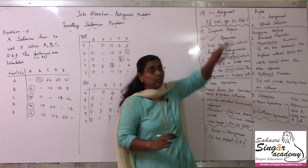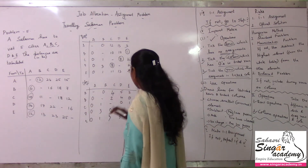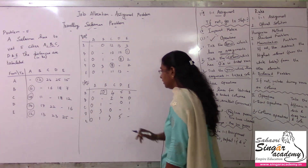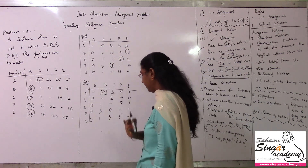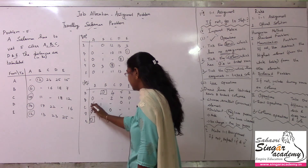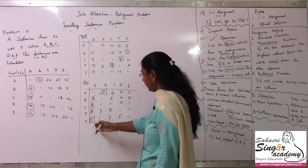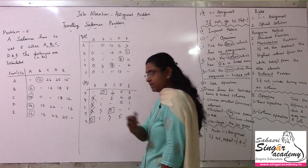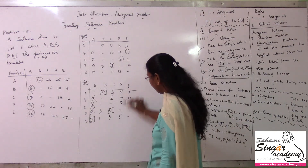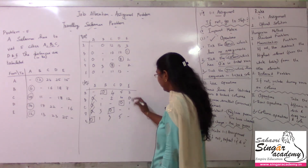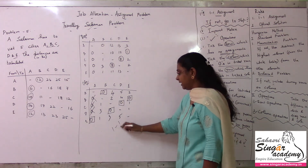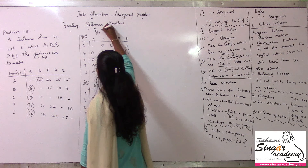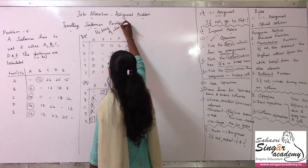I will try to make the 1-to-1 assignment. Starting with row A: there is one single 0, so assign it and cancel others. Row B: multiple zeros — skip, pending. Row C: multiple zeros — skip, pending. Row D: multiple zeros — skip, pending. Row E: one single 0 — assign it. Then going column-wise: column A is already assigned. Column B is assigned. Column C has one single 0 — assign it and cancel other zeros. Column D has one single 0 — cancel others. Column E has one single 0 and others are cancelled. The 1-to-1 assignment is made. But if you check the chain, there is a break between cities — that is the Traveling Salesman Problem issue.